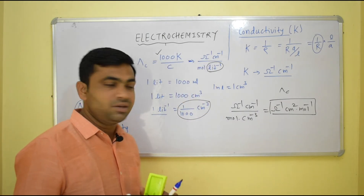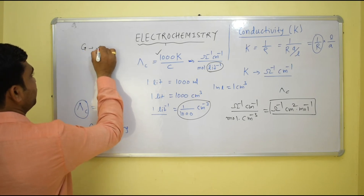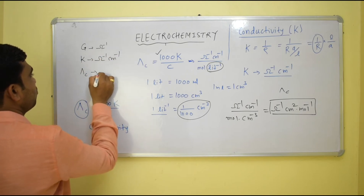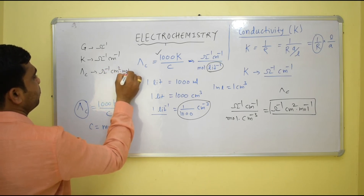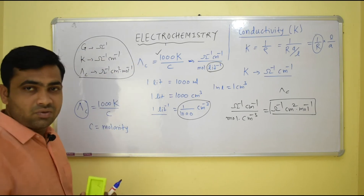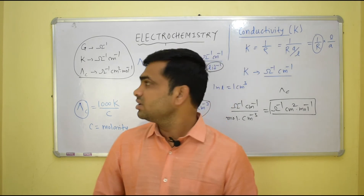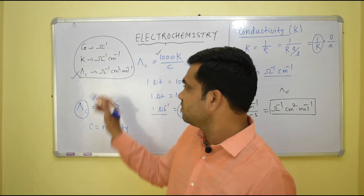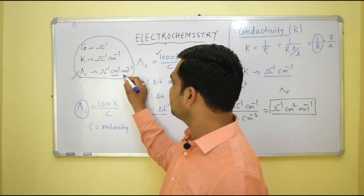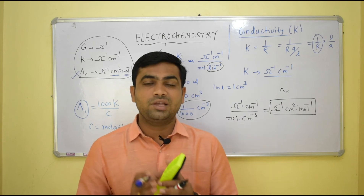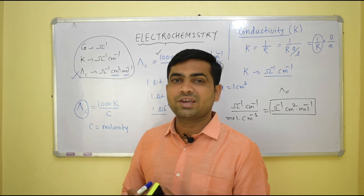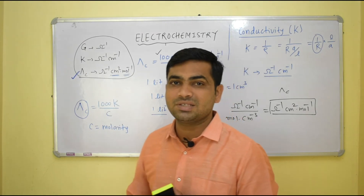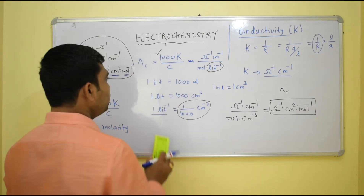To summarize the three important quantities: conductance G has unit ohm⁻¹; conductivity k has unit ohm⁻¹ cm⁻¹; and molar conductivity Λm has unit ohm⁻¹ cm² mol⁻¹. When comparing the conductivities of two solutions, we must use these defined values. Since molar conductivity specifies both the cell constant and the concentration, it is the most useful term for comparison purposes.